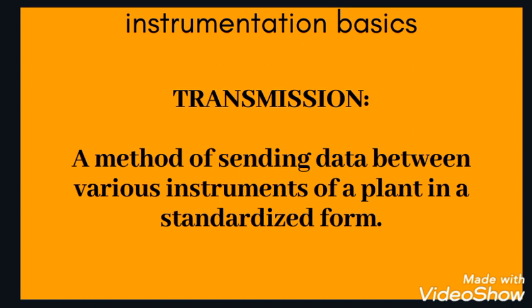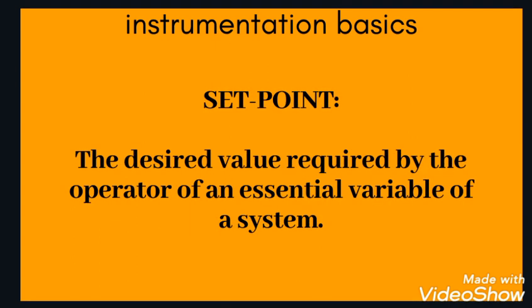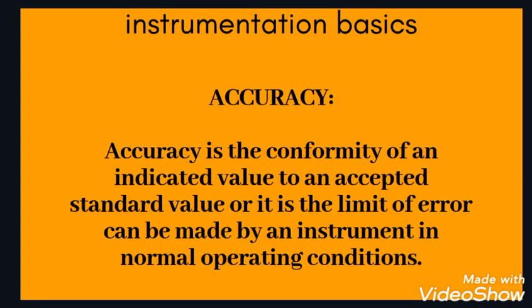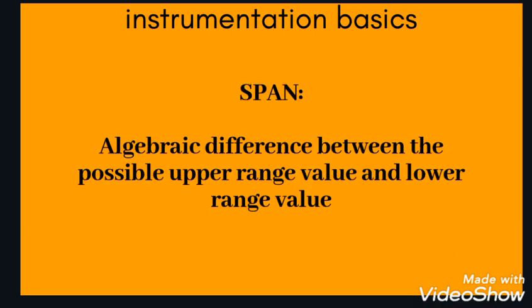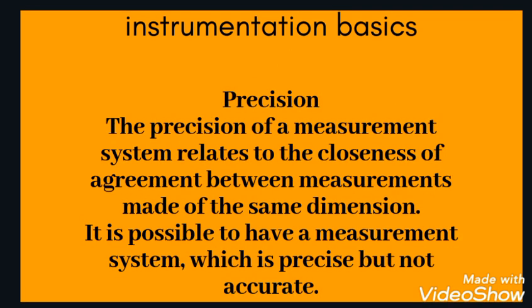Controller: a device in a control loop which regulates the error signals to zero, or a device which regulates the behavior of other devices or process variables to control the process. Transmission: a method of sending data between various instruments of a plant in a standardized form like 4-20 mA, 0-5 V, or 1-5 V. Setpoint: the desired value required by the operator of an essential variable of a system — where the operator wants the process variable (PV) to be. Accuracy: the conformity of an indicated value to an accepted standard value, or the limit of error that can be made by an instrument in normal operating conditions. Span: the algebraic difference between the upper range value and the lower range value is called the span. For example, if the range is 0-100, then the span is 100.